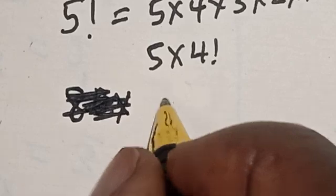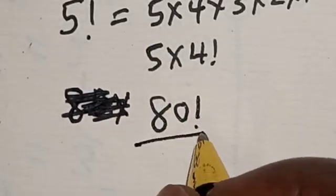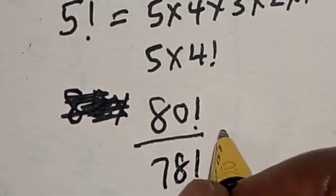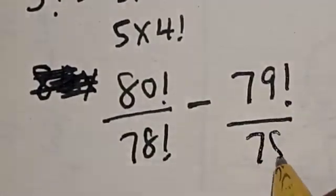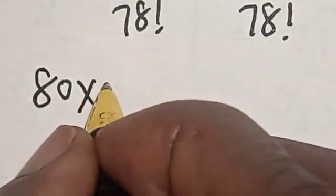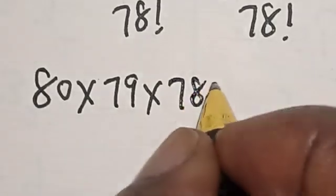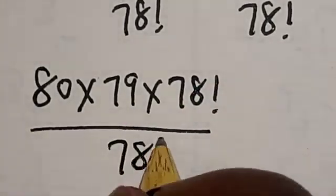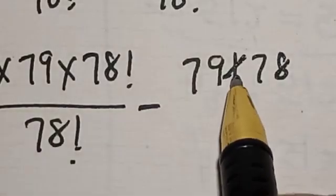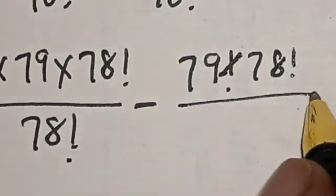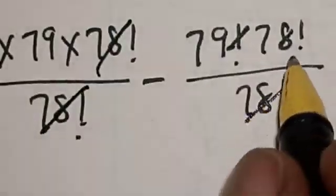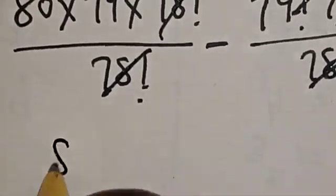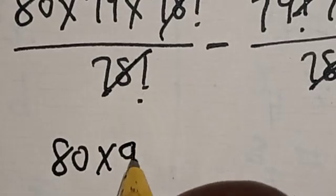Now let's split this expression: 80 factorial divided by 78 factorial minus 79 factorial divided by 78 factorial. We can expand 79 factorial as 79 multiplied by 78 factorial, so the 78 factorials cancel. We are left with 80 multiplied by 79 minus 79.